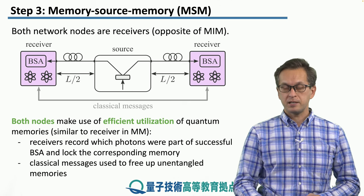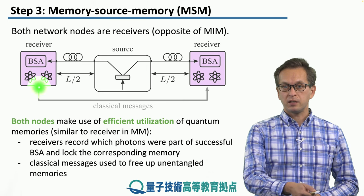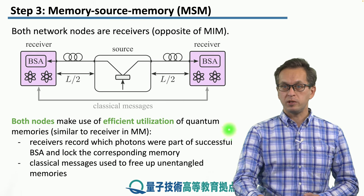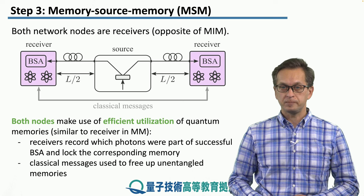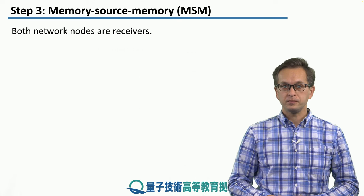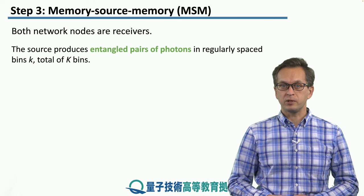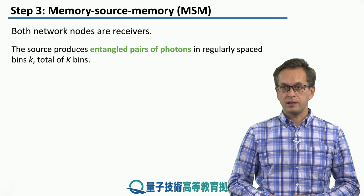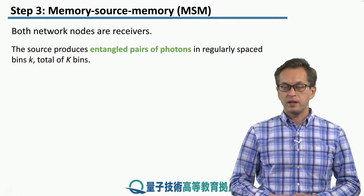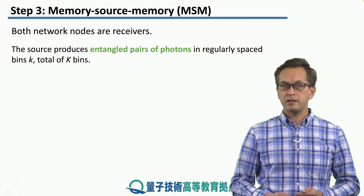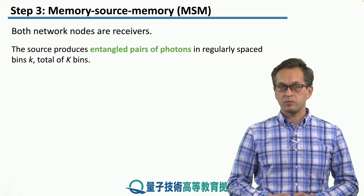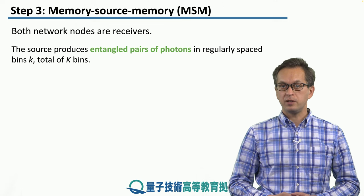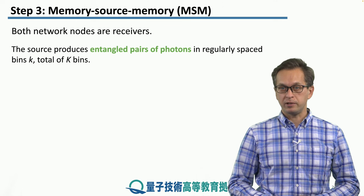At the same time, we still need classical messages being exchanged between both receiving stations. In MSM, the source produces entangled pairs in regularly spaced bins, which we're going to index with small k. The total number of bins will be denoted by capital K.